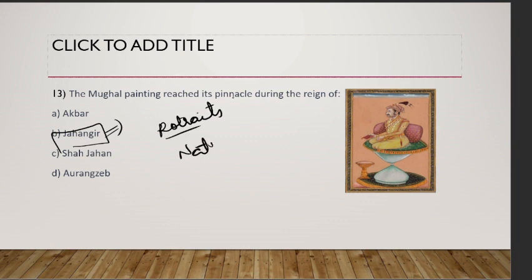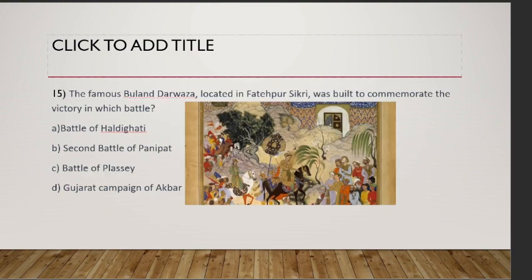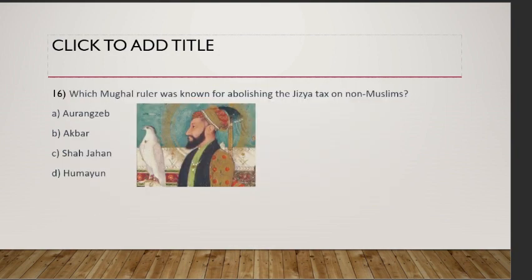Which Mughal emperor extended the empire to include Gujarat? Gujarat was a prosperous kingdom that was brought under Mughal rule. Also, which Mughal ruler was known for abolishing the Jizya tax on non-Muslims? The answer is Akbar.